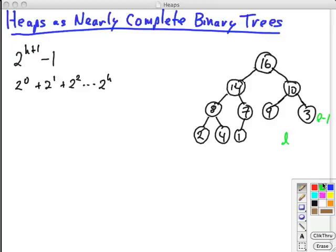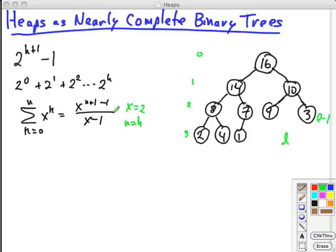2^h, because remember, we are numbering zero, one, two, three as the height of the tree. Then we just have to apply the formula. You can find it in the back of the Corman text, this formula. It's formula A5 in the appendix. So if we set x equals two, because that's the item being raised to a power, and let's set n to be h, because that's going to be the exponent. And so this becomes 2^(h+1) - 1 over 2 - 1, which is equal to 2^(h+1) - 1.